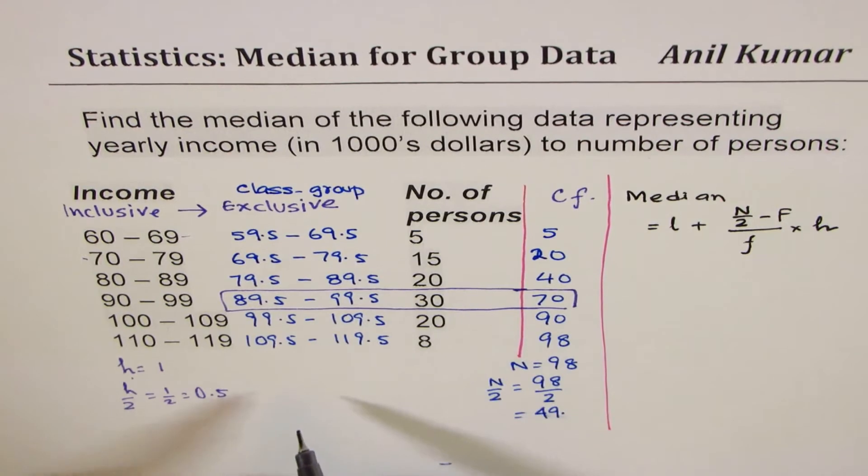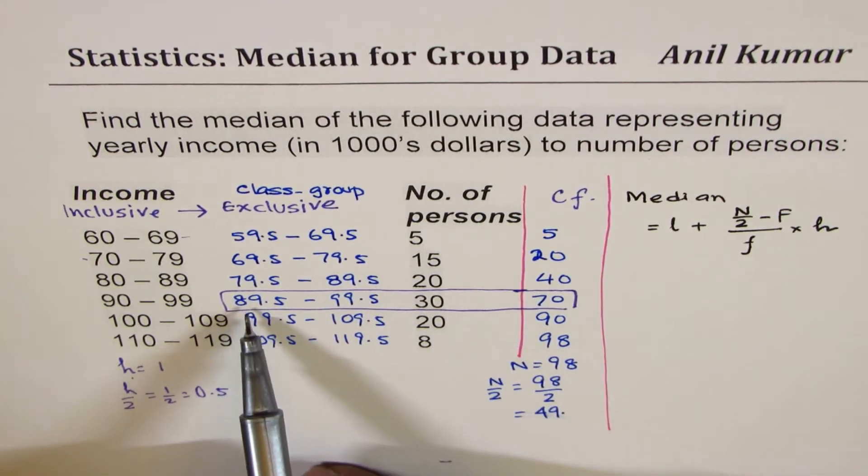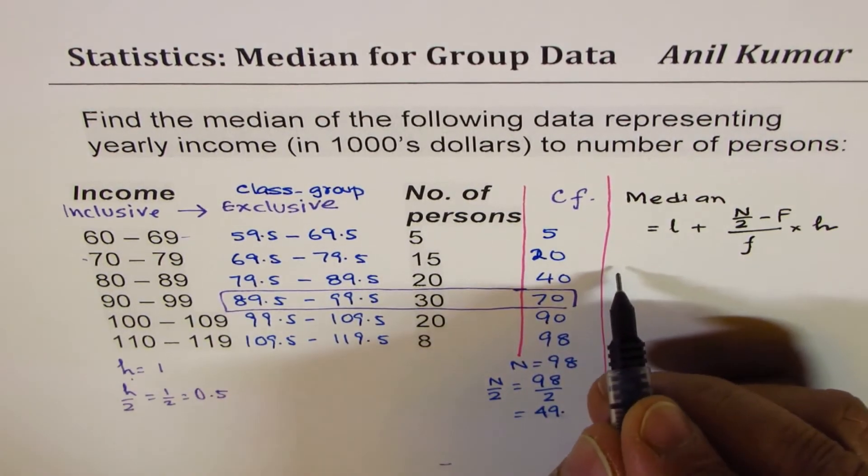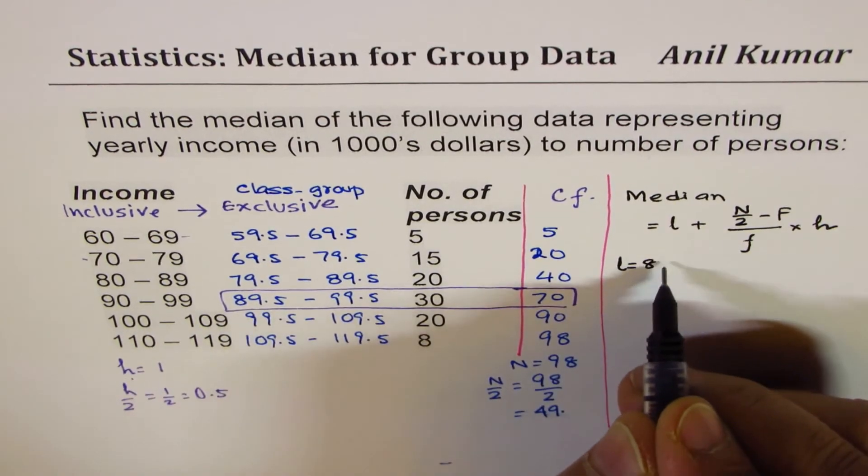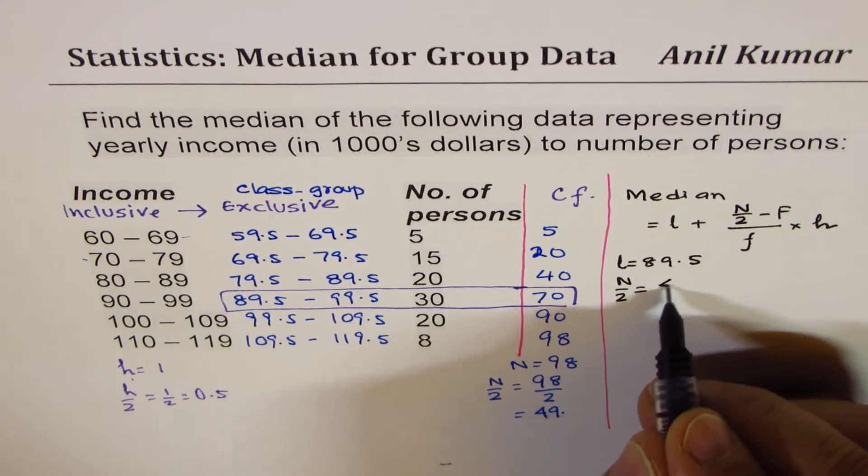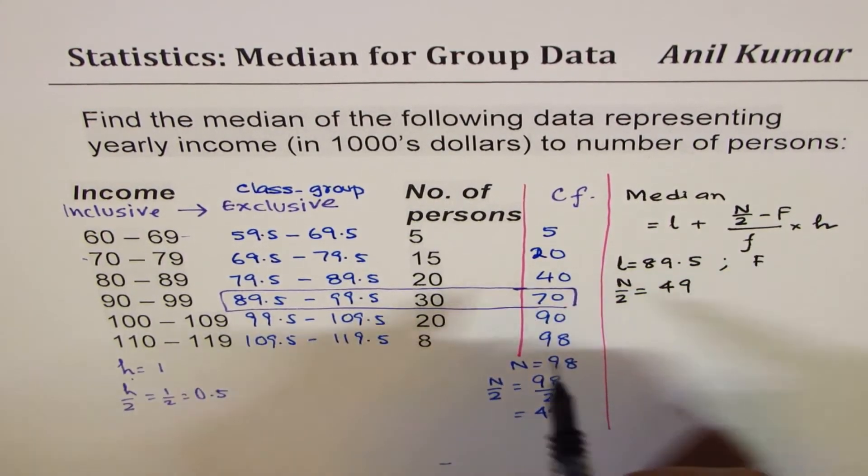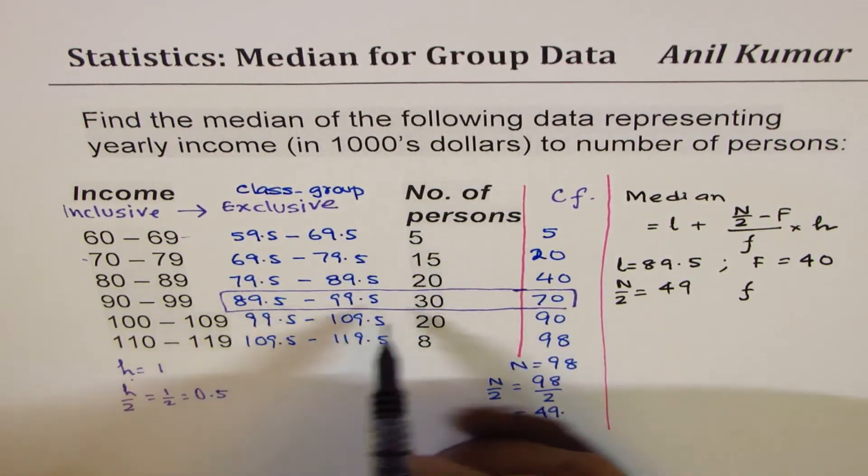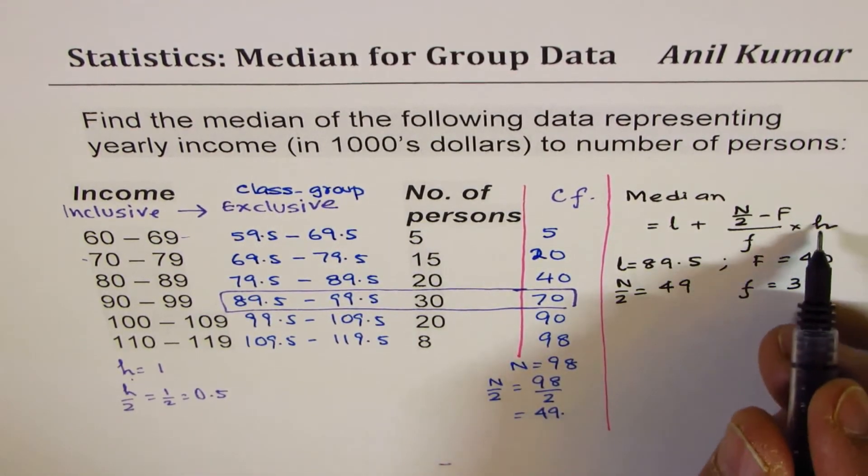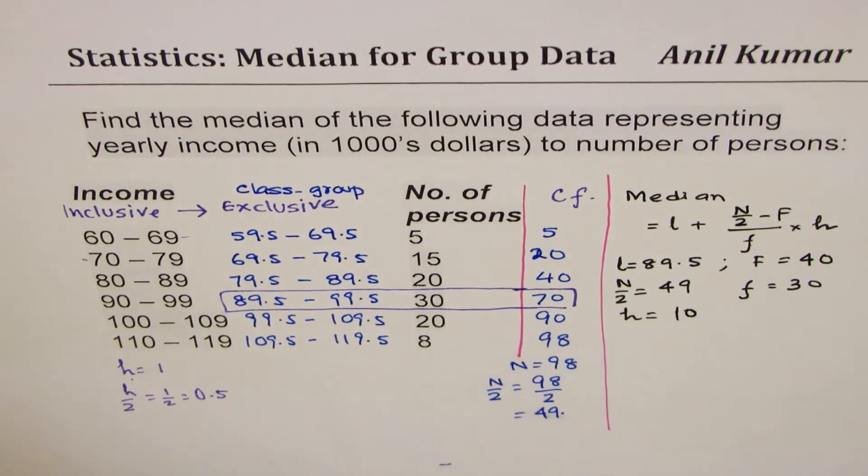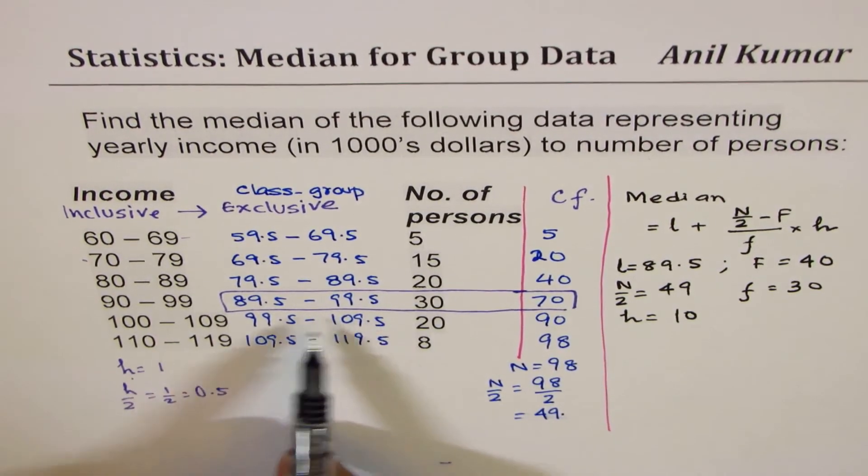That gives you all the values. The lower limit is 89.5 as you can see from here. So we can just substitute these values and calculate. L is 89.5, n by 2 is 49. f is the frequency just before this, which is 40. F is the frequency of this particular modal group, which is 30. And h is the class interval of 10, which is upper limit minus lower limit.